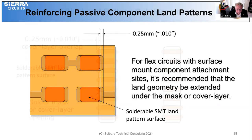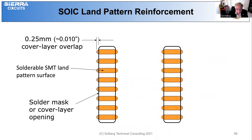The same is true with lead frame devices — we overlap the ends. In this case, we've got a gang opening because these land patterns are very close together, and for cover lay material it's difficult to hold a very close clearance to pad, so we often will have a gang opening.